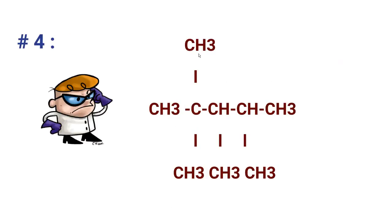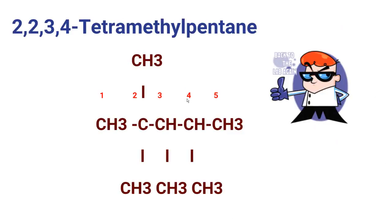Here is the next compound. Notice there are four methyl substituents and the longest chain consists of five carbons. Write down the name. The answer is 2,2,3,4-tetramethylpentane — tetramethyl because four methyl groups are present, pentane because the longest chain has five carbons, and those are the locations of the methyl groups.